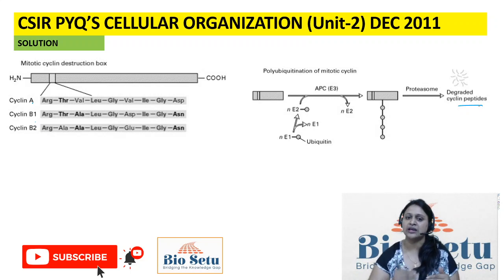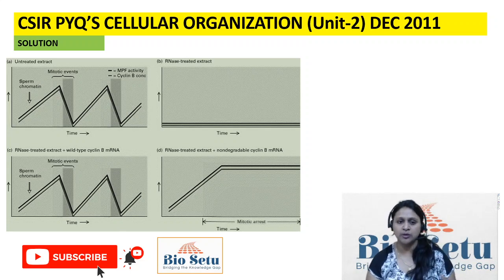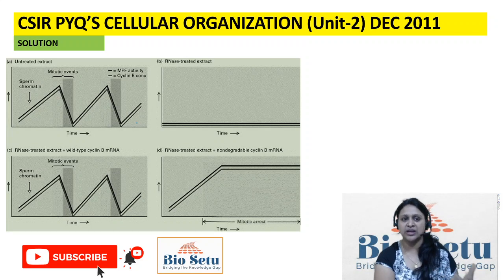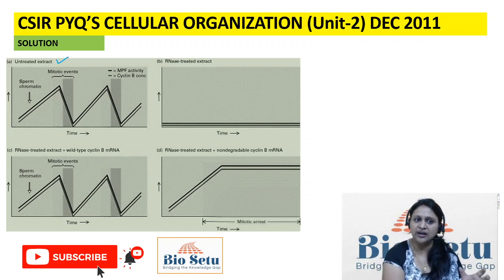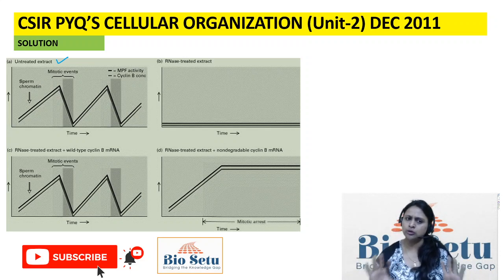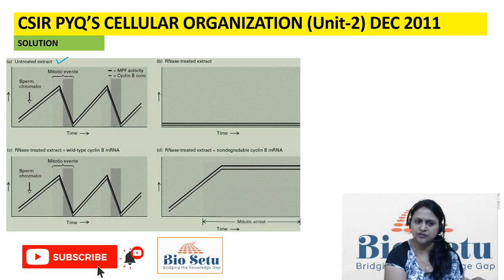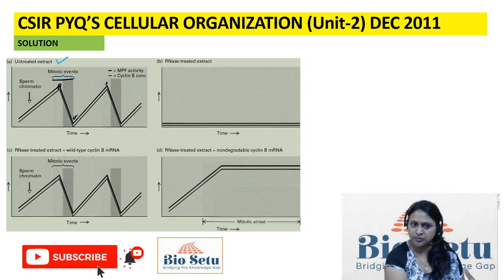There are four major experiments related to RNA treatment. First, taking normal untreated extract with egg and sperm mixed — everything is normal. Mitotic activity: S phase, then M phase, then S phase — MPF concentration is high in M phase, then lower. This is the normal baseline condition.